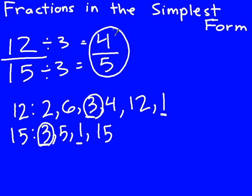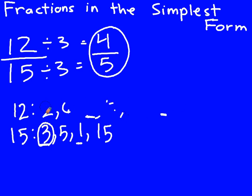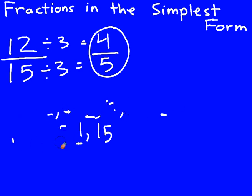4 fifths is equivalent to 12 fifteenths. If I drew out a pie chart — one made with 15 pieces shaded in 12, and one with 5 pieces shaded in 4 — you would see that they're both shaded in equally. And remember, fractions are just division problems: 12 divided by 15 and 4 divided by 5 both give 0.8 on a calculator because they're equivalent fractions.